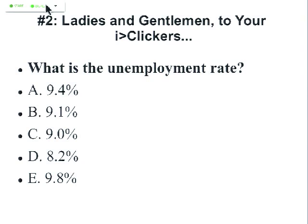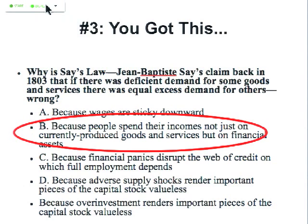You've got this — Say's Law: why is it that the claim holds that there's always enough demand in the economy to employ everybody? That if some industries have deficient demand, there will be others with excess demand where businesses are frantically looking for workers. The answer is that people want to spend their money not just on currently produced goods and services, but on financial assets. When a huge number of people get into their heads that they want to accumulate more financial assets and spend less on currently produced goods and services, the economy gets into trouble. That's where depression economics starts — from the fact that Say's Law fails.